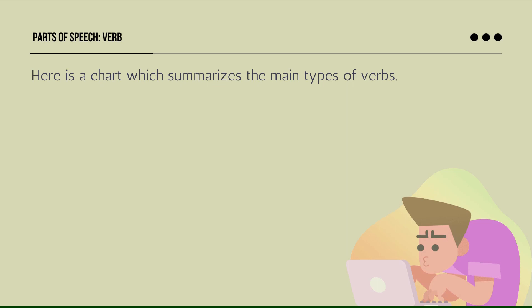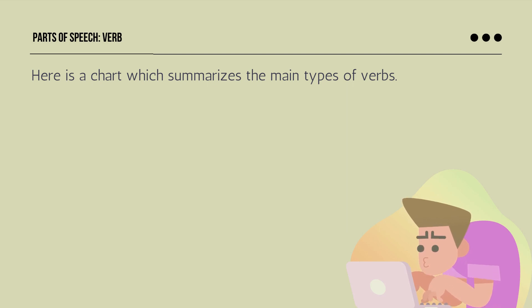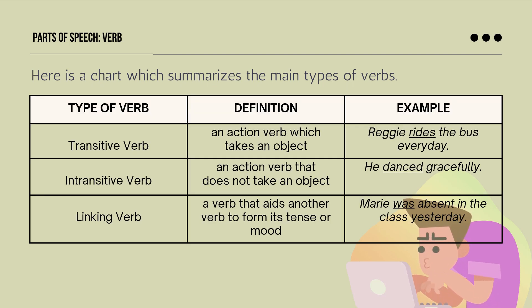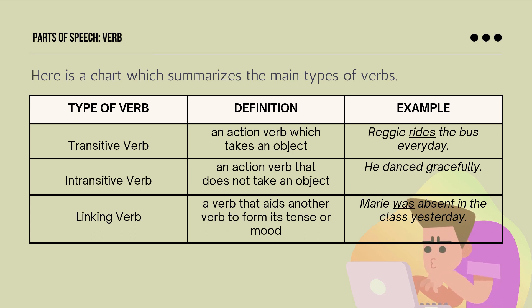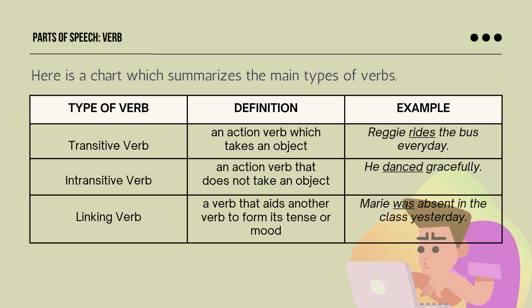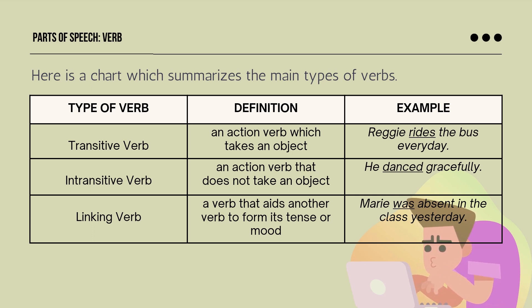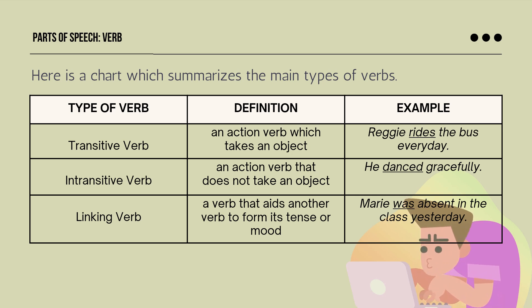Here is a chart which summarizes the main types of verbs. Transitive verb is an action verb which takes an object — for example, 'Reggie rides the bus every day,' where the bus is the object. Intransitive verb is an action verb that does not take an object — for example, 'He danced gracefully.' With transitive verbs, there is a receiver of the action; with intransitive verbs, there is none. Linking verb connects the subject with its verb — for example, 'Marie was absent in class yesterday.' Linking verbs include is, was, are, were, and being.